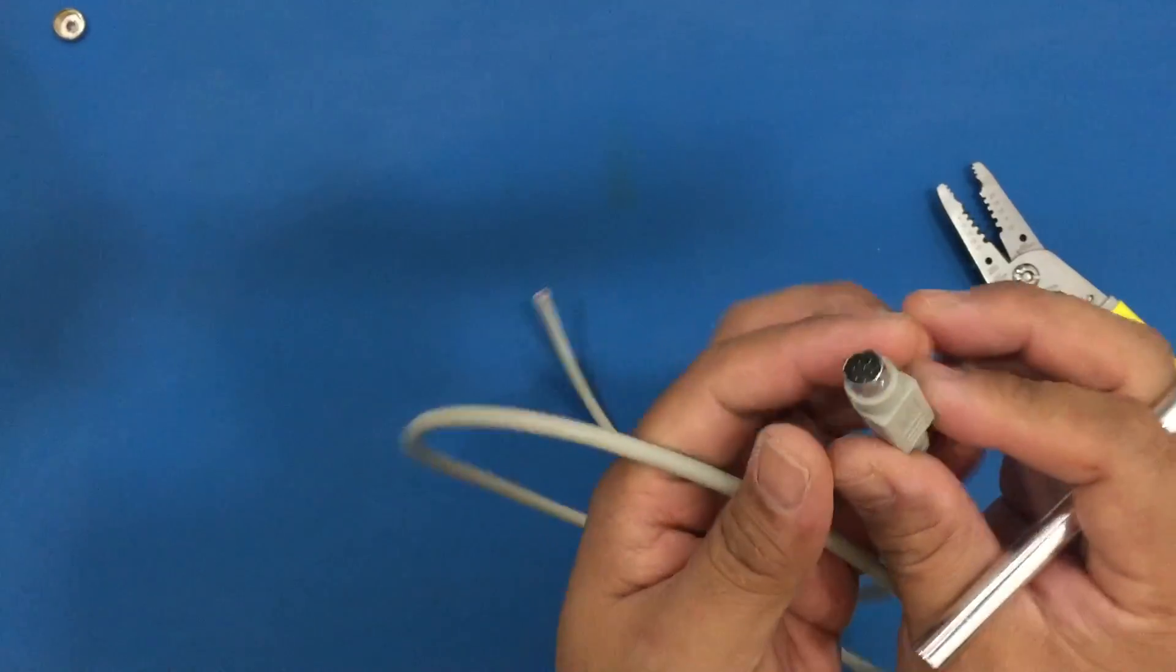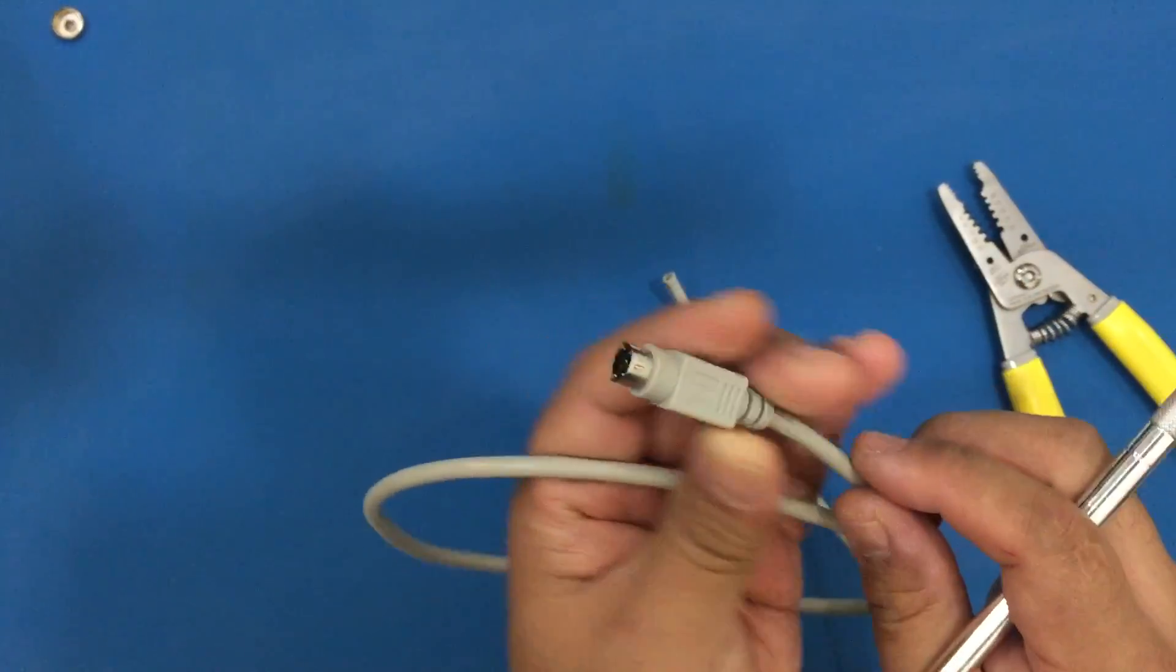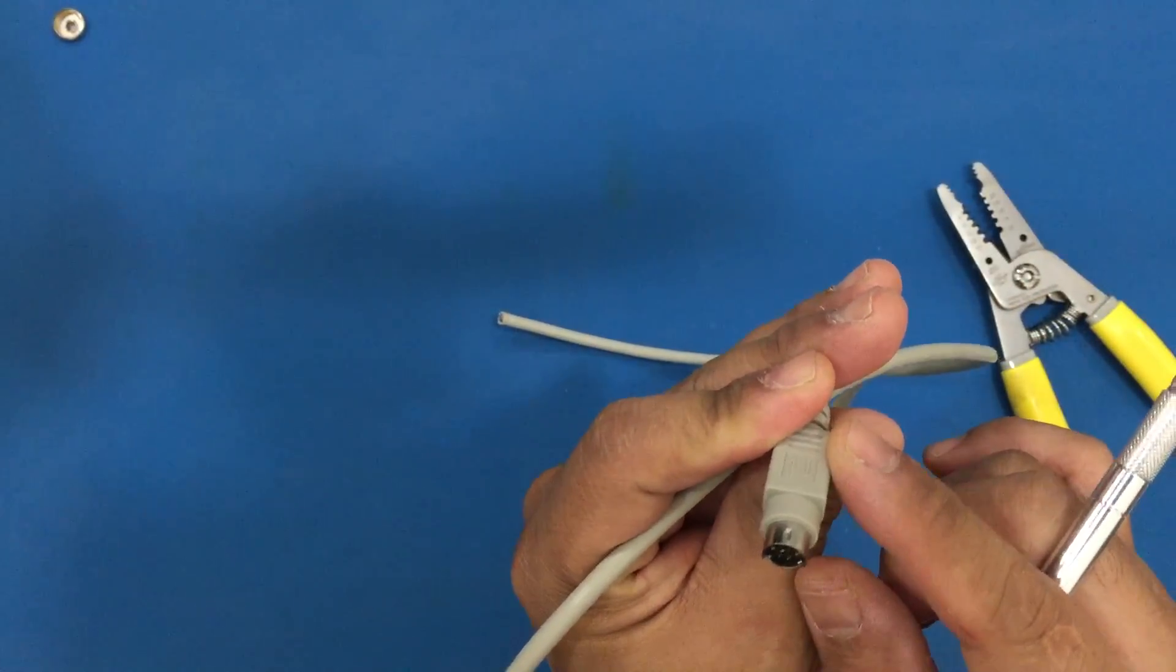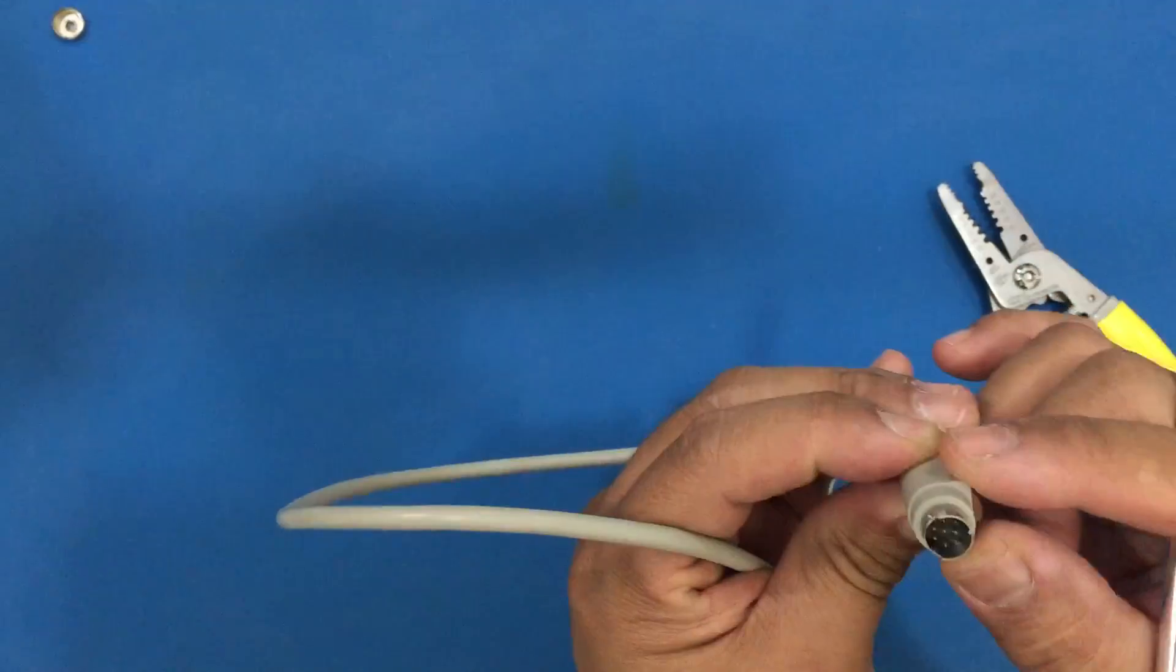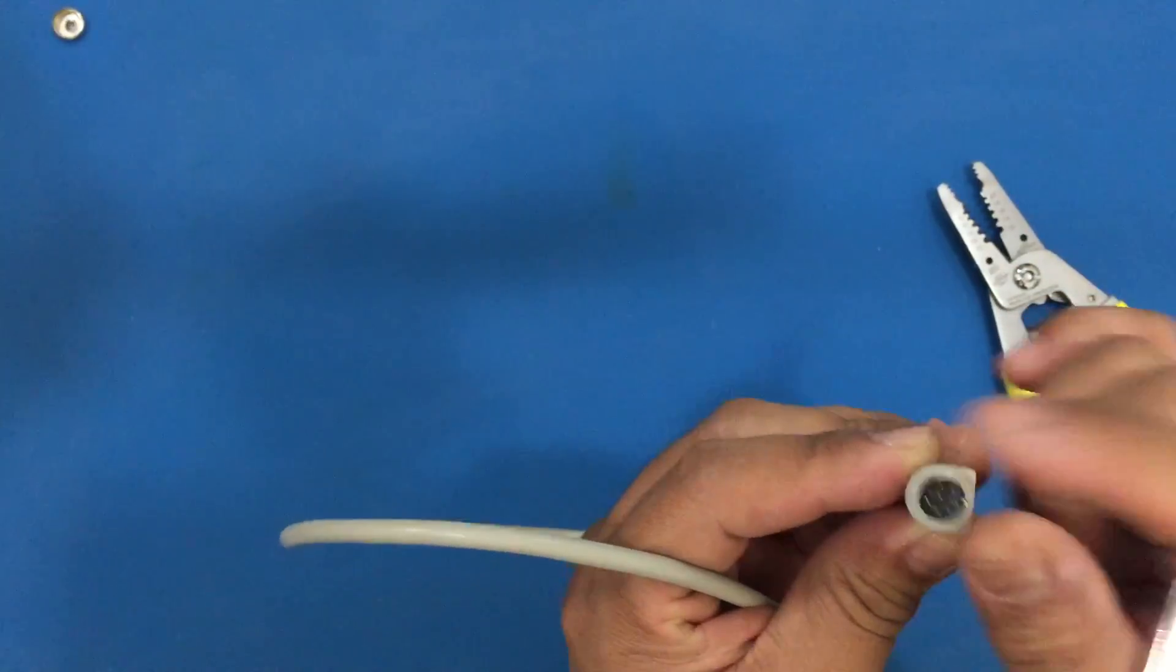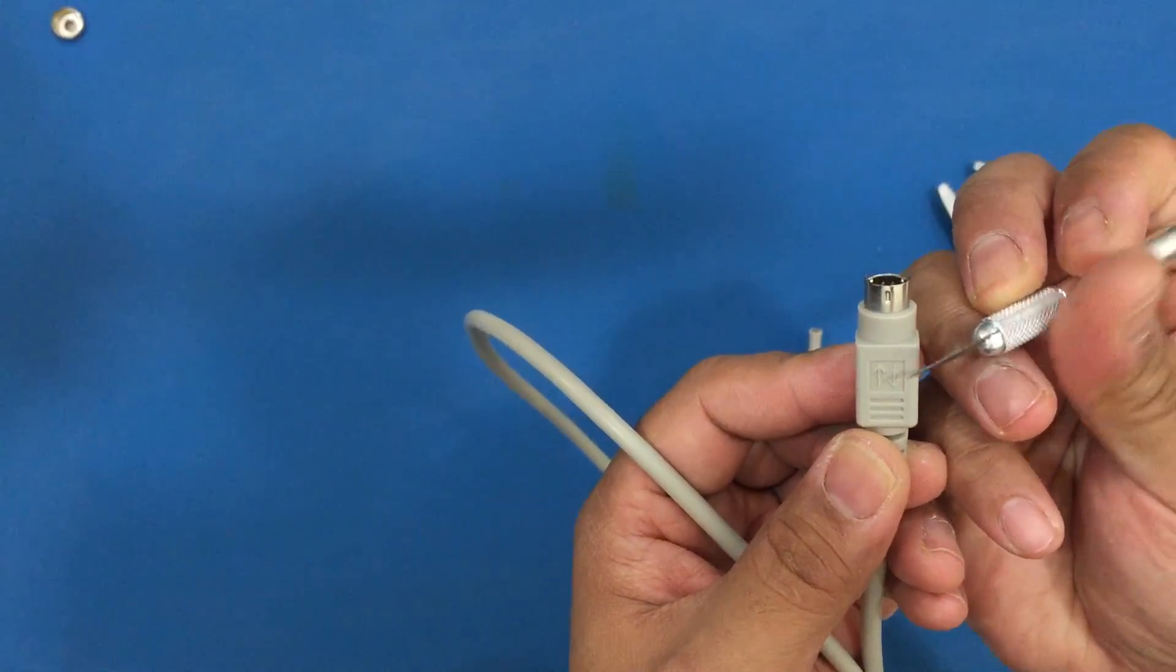I just fitted this end to the Framemeister. What you want to get is a rounded one if you can. The squared-off portion will butt up against the Framemeister so it does not fit correctly. So I'm gonna just shave some of this material off.